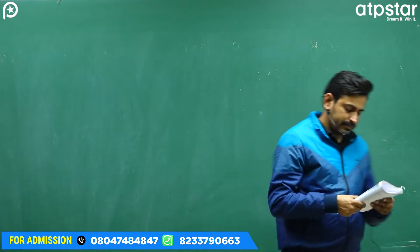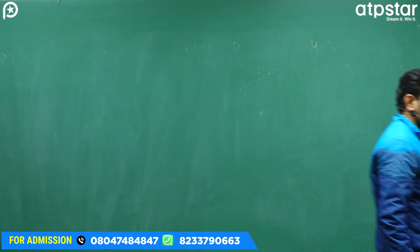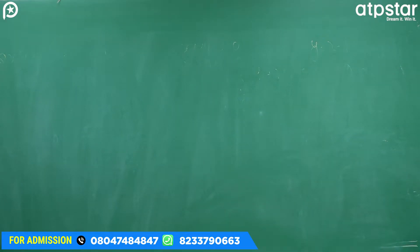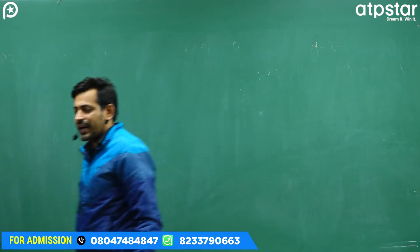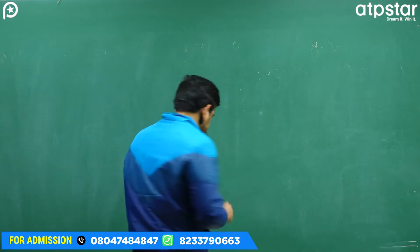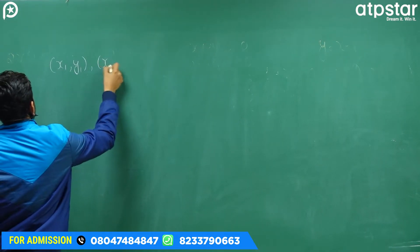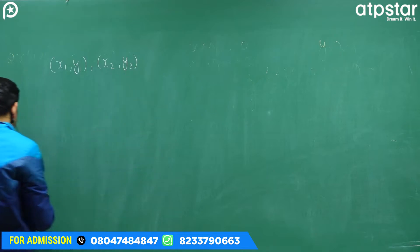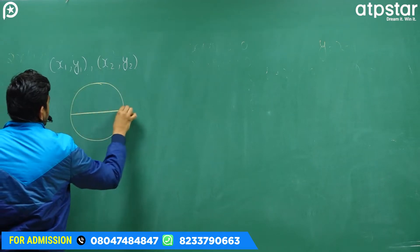Diametric form — equation of a circle whose diametric endpoints are given. अगर circle के diameter के endpoints आपको given हैं, तो आप उस circle की equation directly लिख सकते हैं।